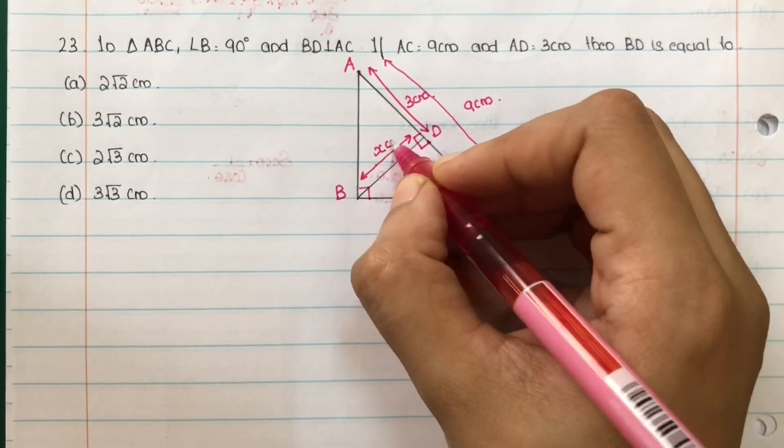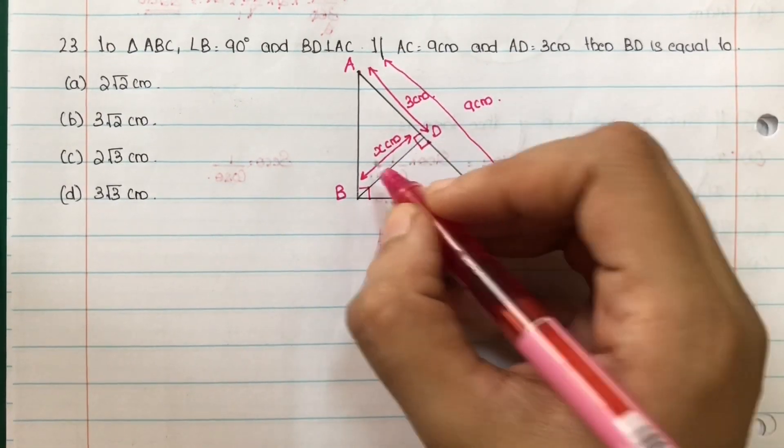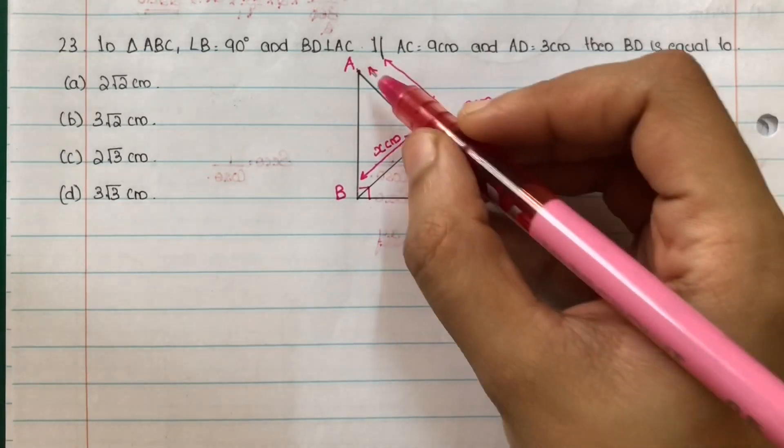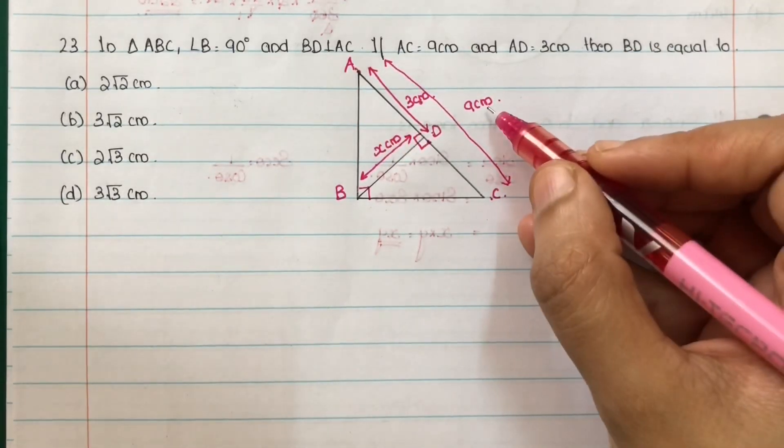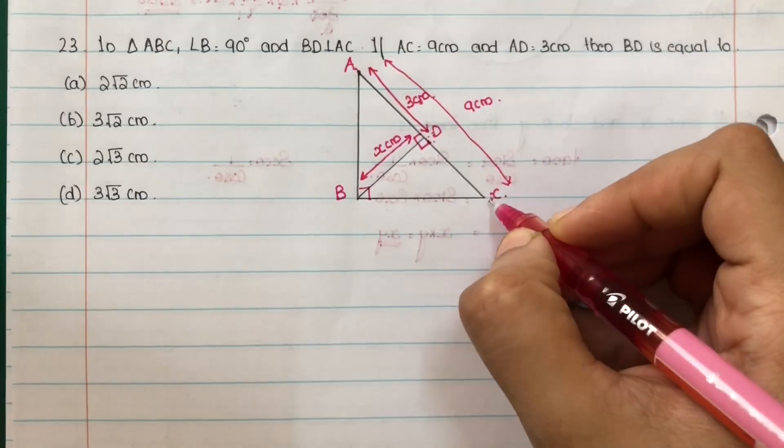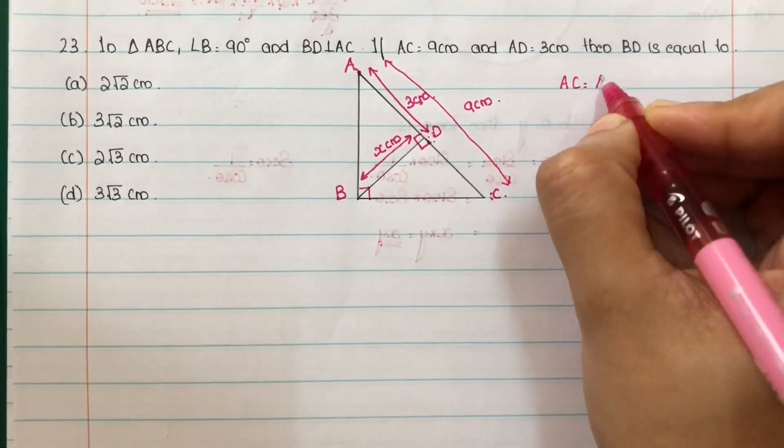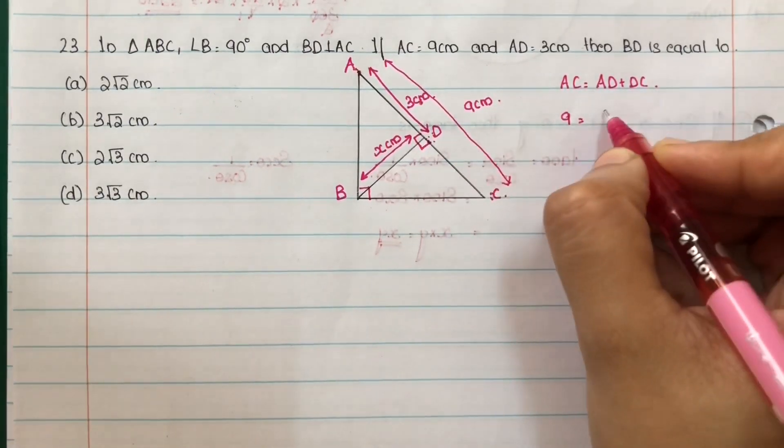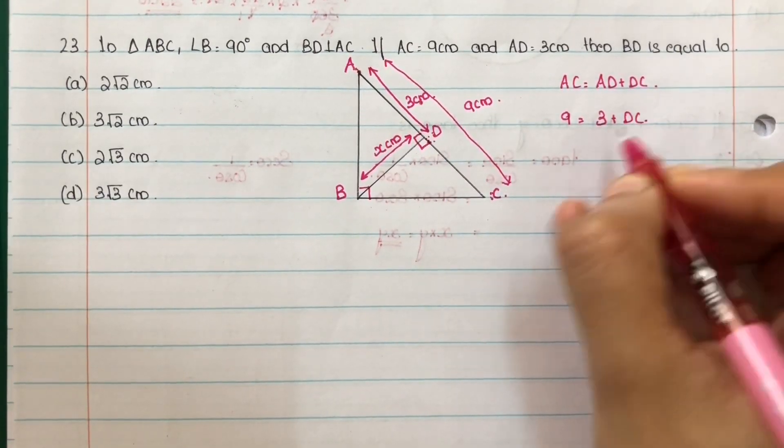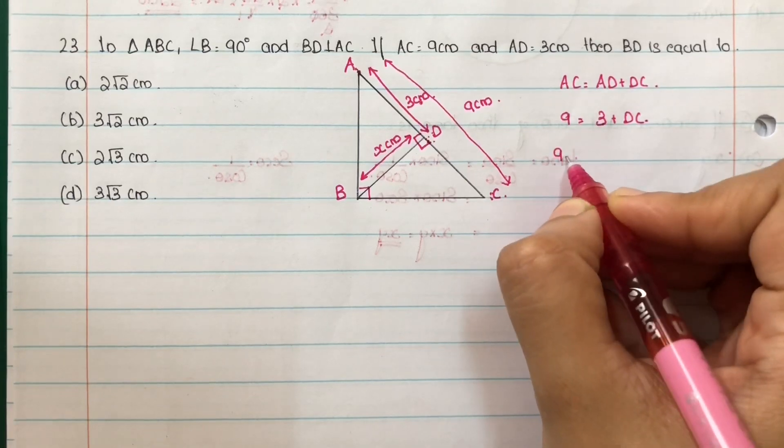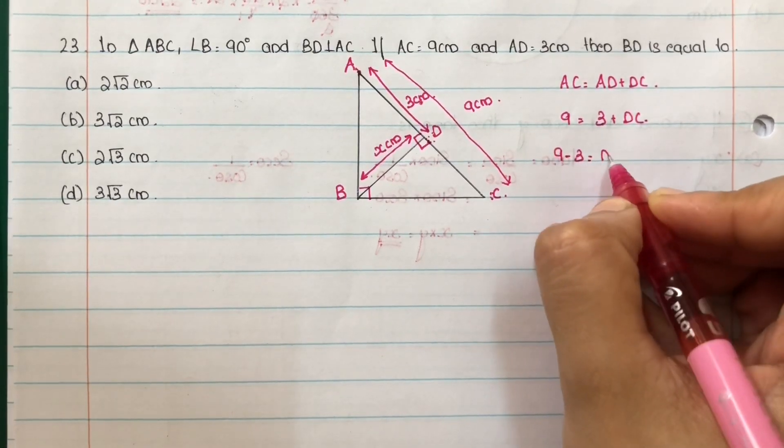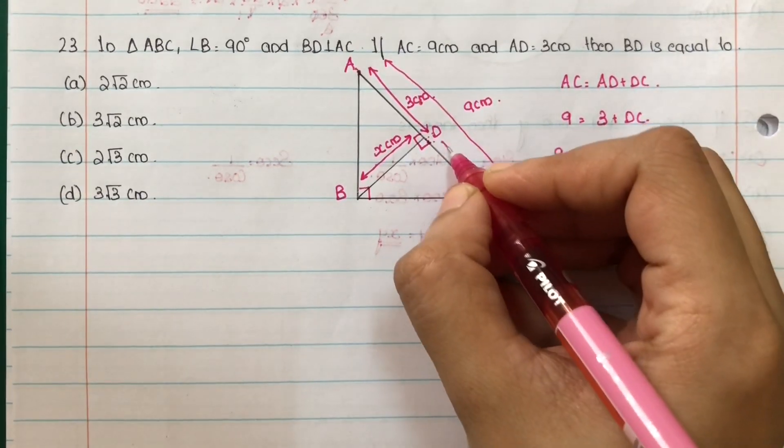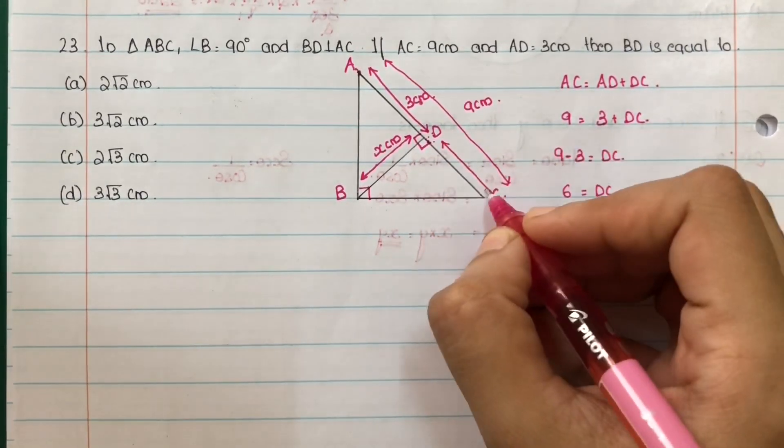This length is equal to x centimeters, we assume. AC is equal to AC, and AC 9 centimeters given, and AD 3 plus DC. So 3, DC is equal to 9 minus 3 is equal to DC. That is 6 equal to DC. DC, this length is equal to 6 centimeters.